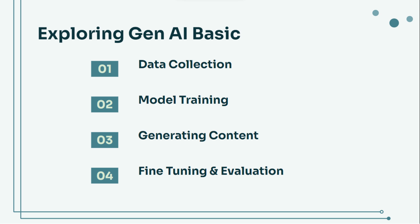For example, if you're training a text generation model, you might use a large collection of books, articles, or web pages. Two: model training. This is where the magic happens. During training, the AI model learns patterns and structures in the data. For text models, this might include grammar, vocabulary, and writing style. Training a model requires significant computational power and time.